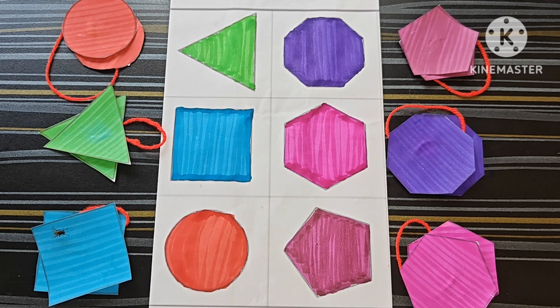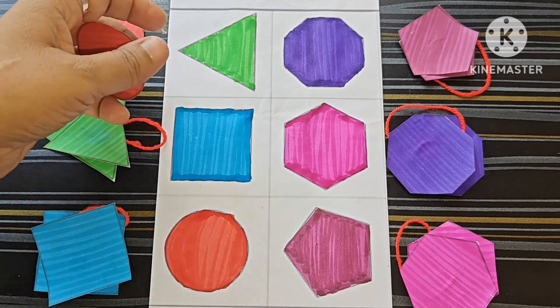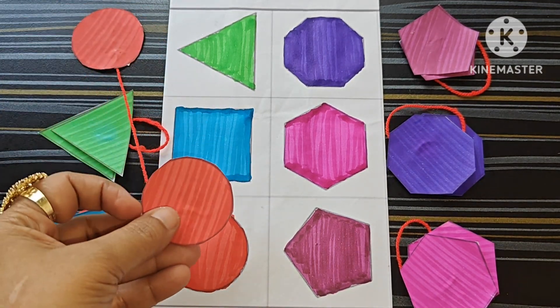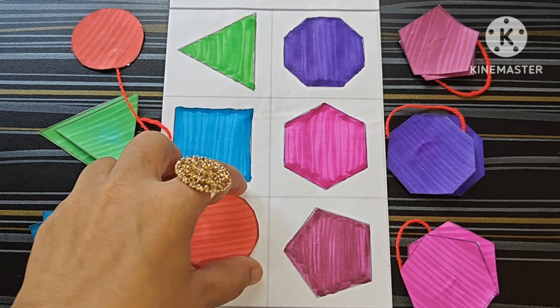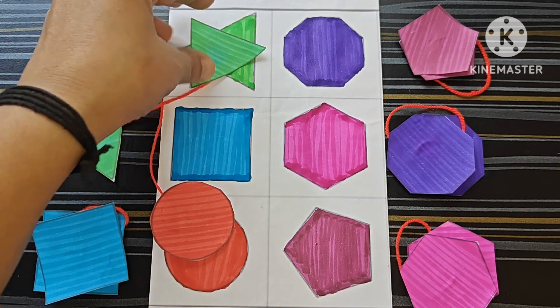Now let us match the shapes. This is circle, where is circle? This is triangle, square, circle, this is circle. So you put this circle here. Triangle, where is triangle? Here this is triangle.